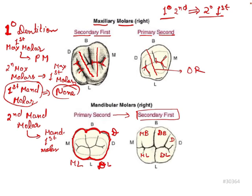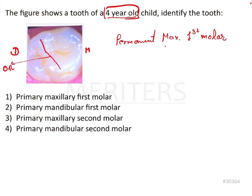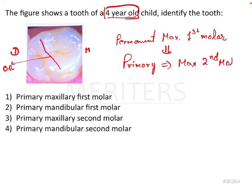There is very clear similarity in the occlusal surface between the primary second mandibular molar and the permanent first mandibular molar. Going back to the question, this tooth looks quite similar to the permanent maxillary first molar, which in the primary dentition is resembled by the primary maxillary second molar. So the answer is very clear: the primary maxillary second molar — option 3 — is the correct answer.